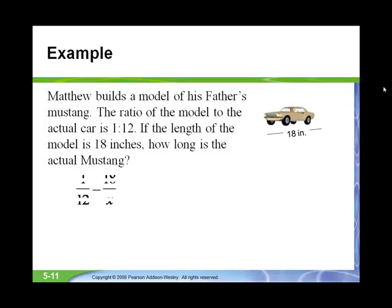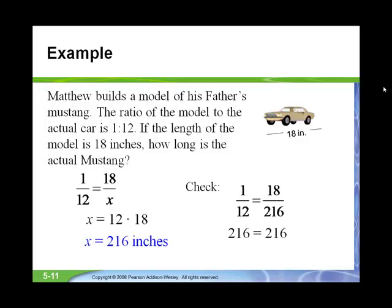The model is 18 inches long. The ratio 1 to 12 can be set as a fraction, where 1 represents the model and 12 represents the actual car. So 18 to x is our second ratio. As a proportion, we set them equal and do the calculations: 1 times x equals 12 times 18. 12 times 18 is 216 inches. Since x is already by itself, we don't have to do any algebra. We double-check by taking 18 divided by 216 and doing the cross product to ensure this proportion is true. So the length of the actual Mustang is 216 inches, or 18 feet.